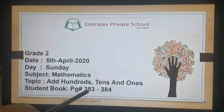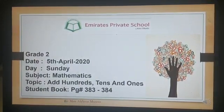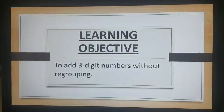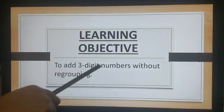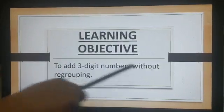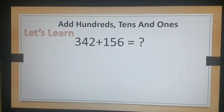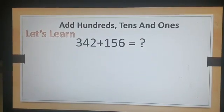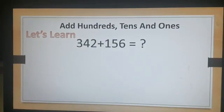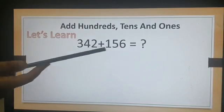Student book page number 383 and 384. Today our learning objective is to add 3 digit numbers without regrouping. Do you remember we have already learned how to add 2 digit numbers? Now we're going to add 3 digit numbers.